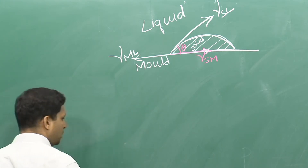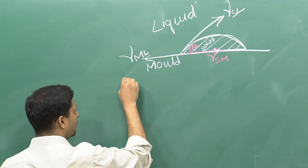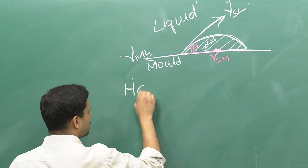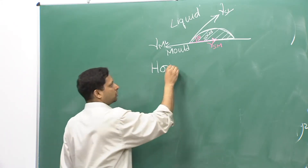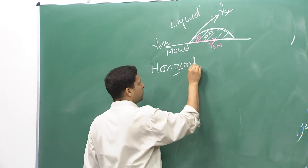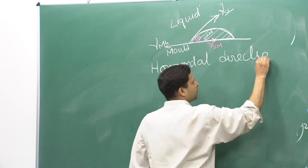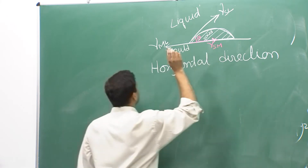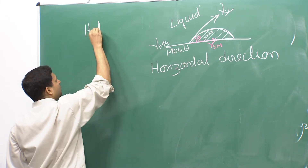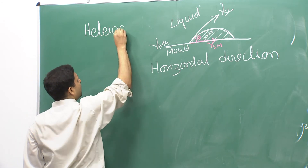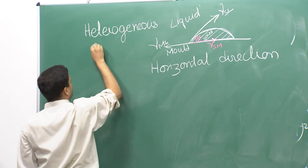We try to do a horizontal balance of forces — remember, these are tensions, so they are vectors. We perform the force balance in the horizontal direction. One thing to mention: we are talking about heterogeneous nucleation.